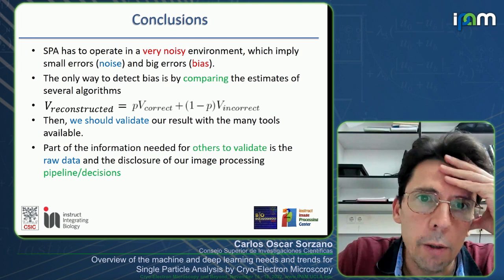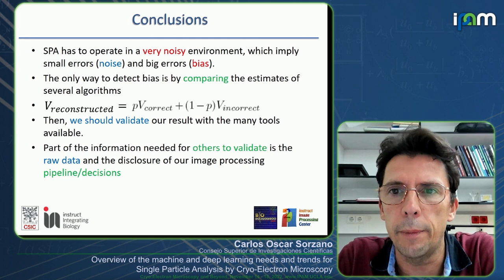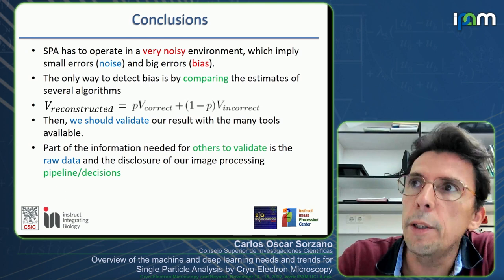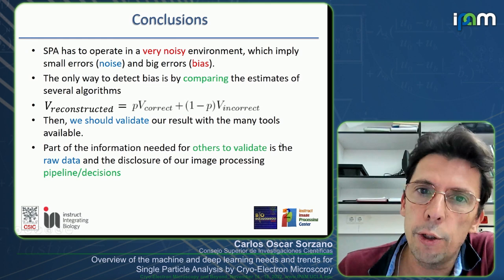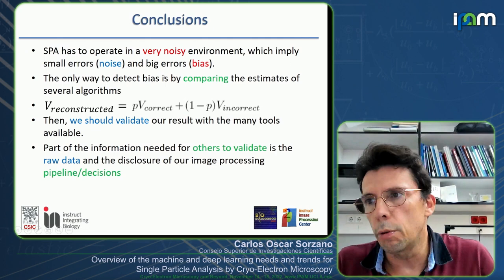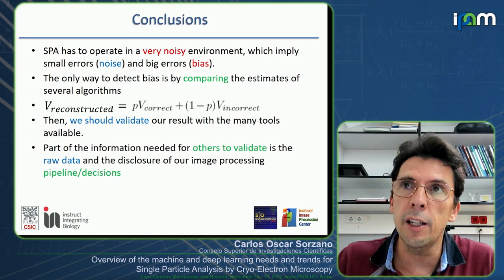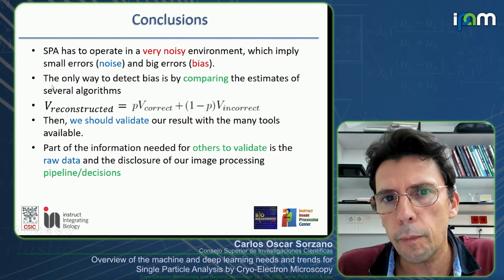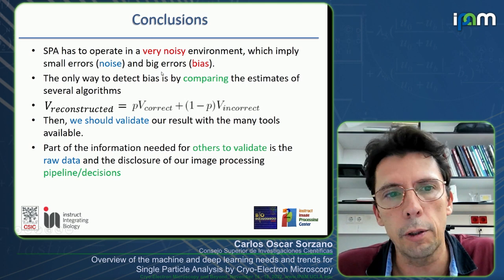In conclusion: single particle analysis operates in a very noisy environment, which implies small errors for some parameters — a little variance around the ground truth. But you will also have a fraction for which you commit big errors. The only way to identify whether your error is small or big is by comparing those parameters to an equivalent estimate from another algorithm, or at least a second run of the same algorithm with some randomness, so you can see whether the parameter you obtained is stable.